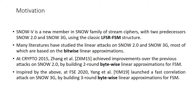SNOWV has two predecessors, SNOW2 and SNOW3G, using the classic LFSR-FSM structure. Many works in the literature have studied linear attacks on SNOW2 and SNOW3G, most of which are based on bitwise linear approximations. At Crypto 2015, some authors achieved improvements over previous attacks on SNOW2 by building two-round bytewise linear approximations for the FSM.